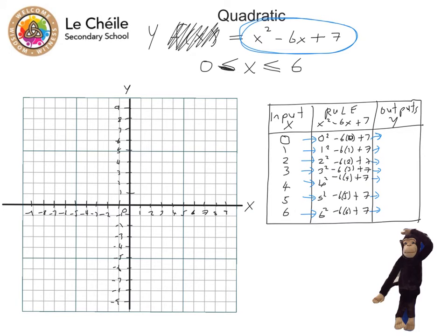So let's work out the outputs. 0 squared, or 0 to the power of 2 is 0, minus 6 multiplied by 0 is 0, plus 7, just leaves me with plus 7. And if I do the sum for all of these, I get these numbers. And feel free to check my maths there that these are correct.